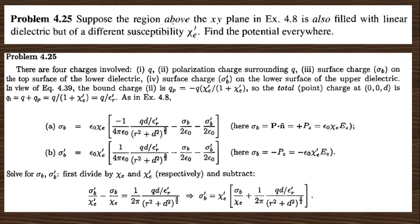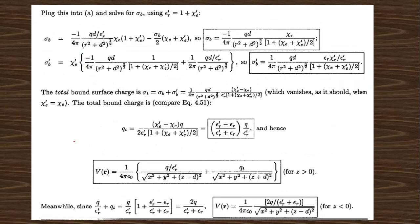Question: suppose the region above the xy-plane in example 4.8 is also filled with a linear dielectric of defined susceptibility. Find the potential everywhere. The four charge types involved are the point charge q, the polarization charge surrounding q, the surface bound charge, and the surface charge on the lower surface. The bound charge is calculated, the total point charge is obtained, and the resulting potential for z > 0 and z < 0 is derived.